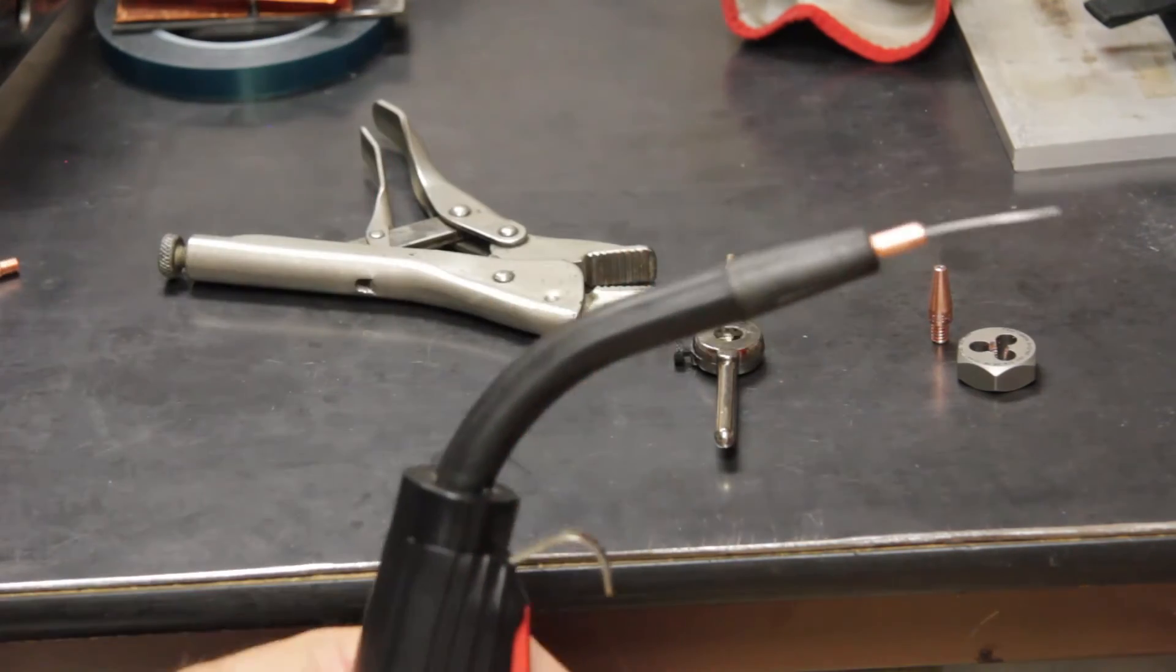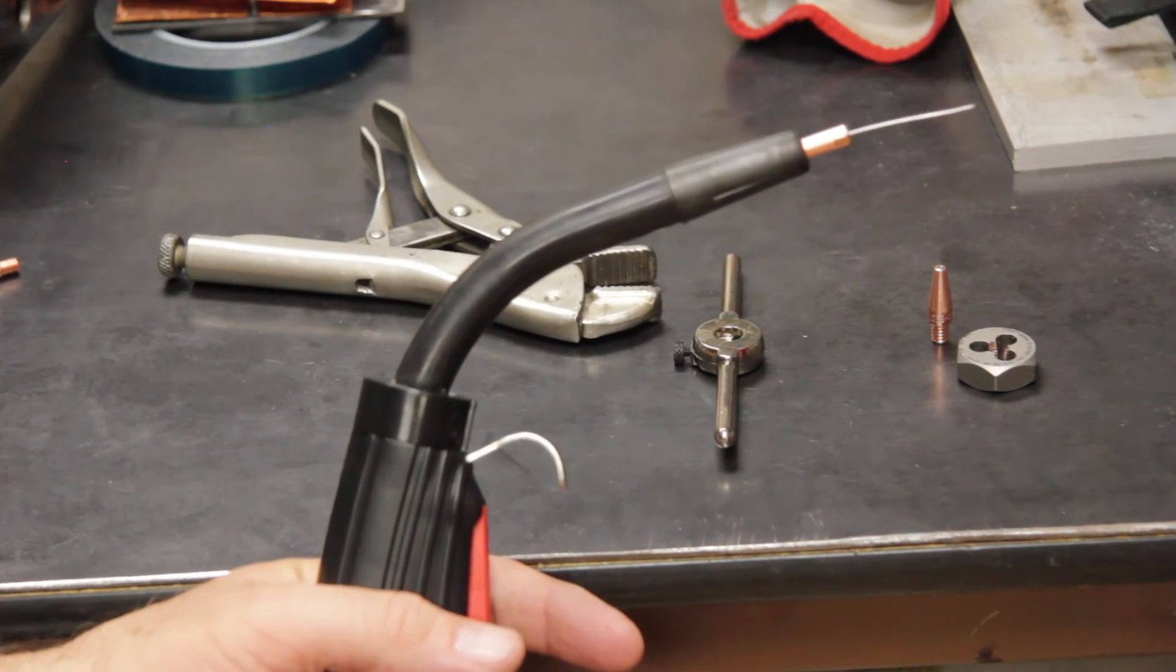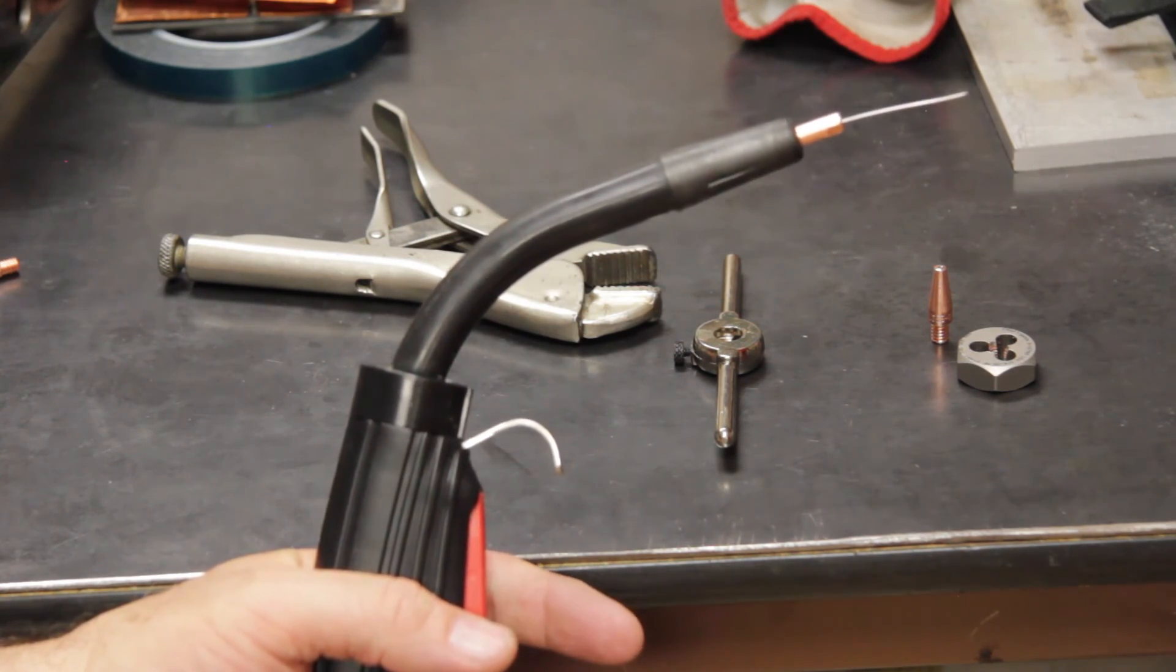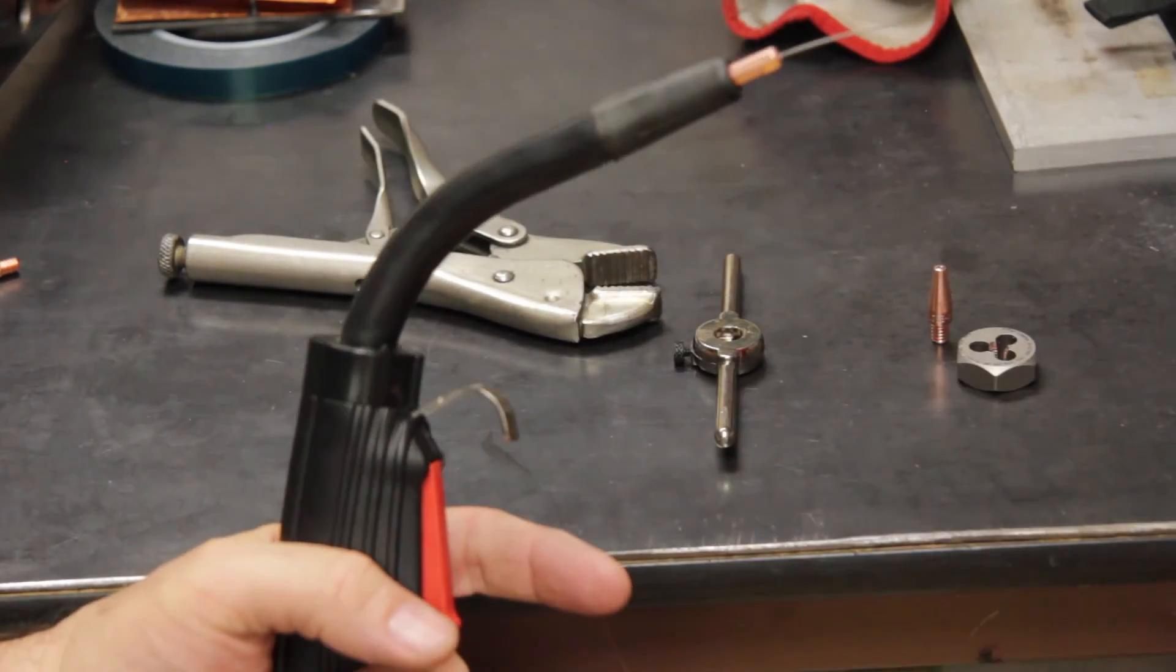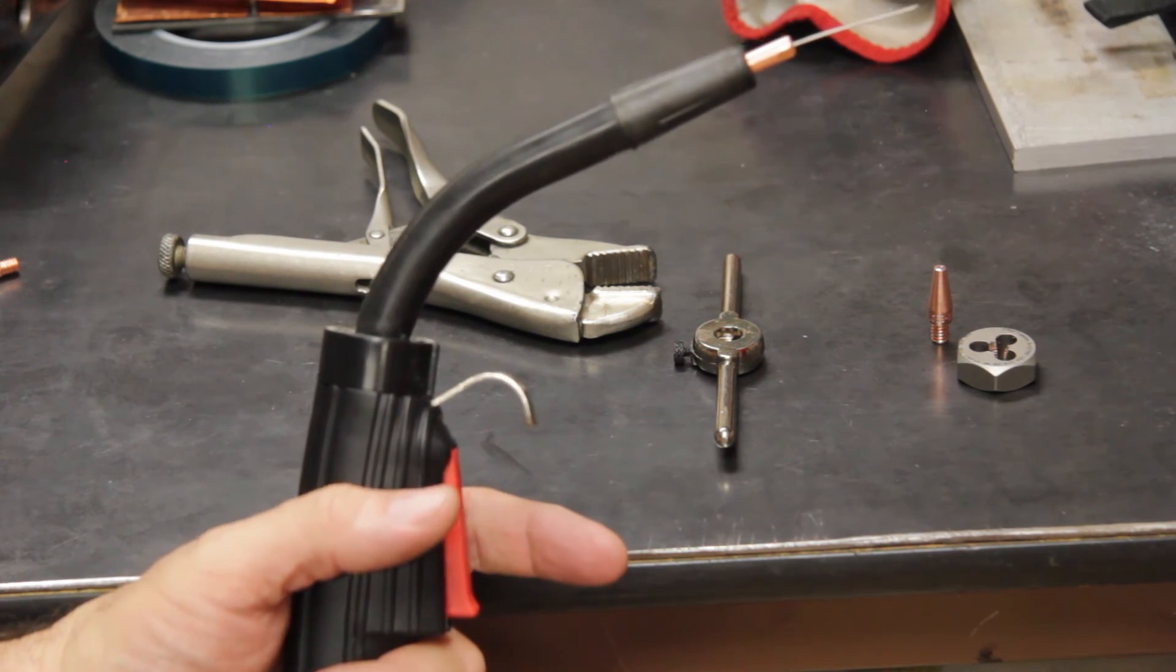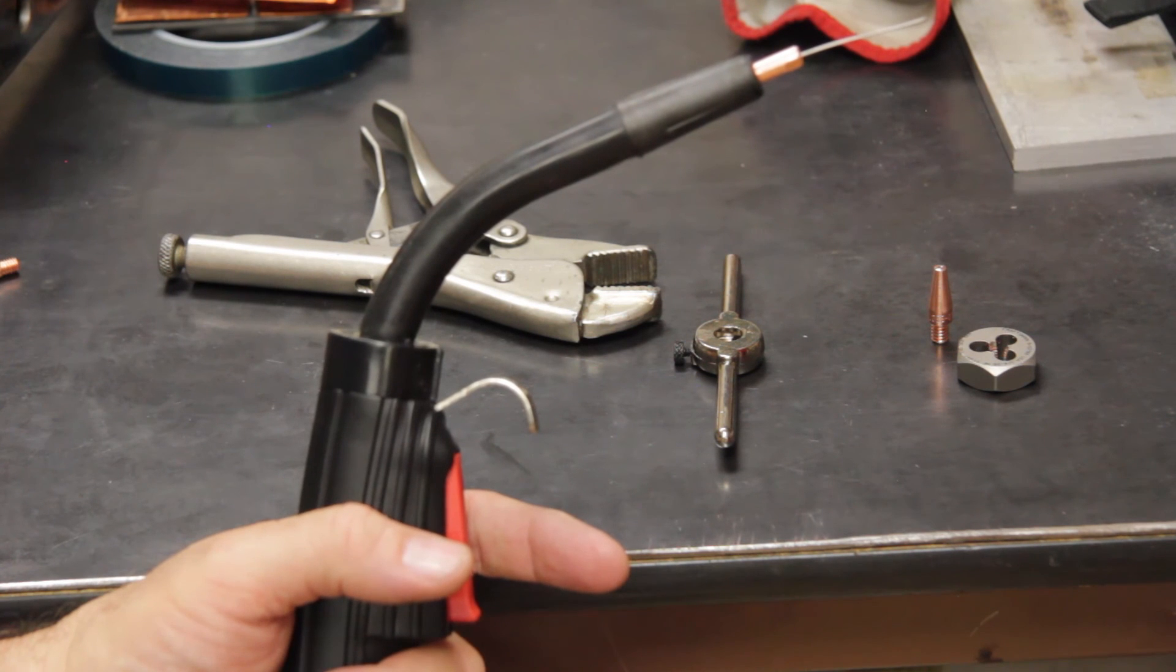So, again, save you a few dollars, or if you happen to be in a bind and run out of contact tips, you can always pop over to Harbor Freight or Home Depot, pick up the old style, and keep on welding. I hope you enjoyed this tip. Stay tuned for more videos. I'll be publishing some here shortly. Thanks a lot.